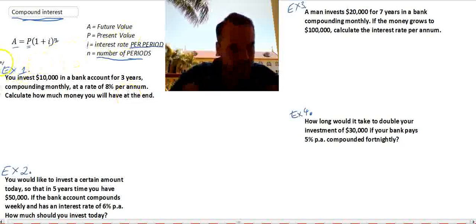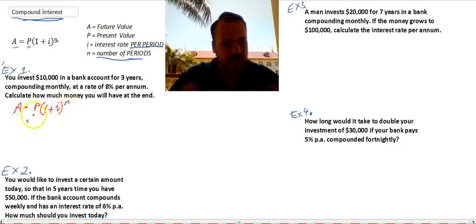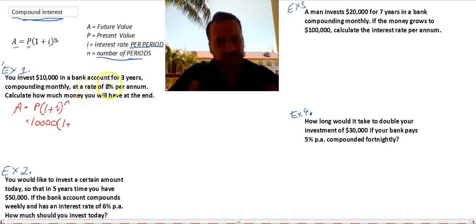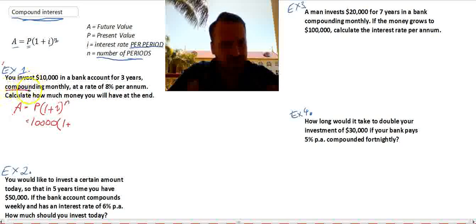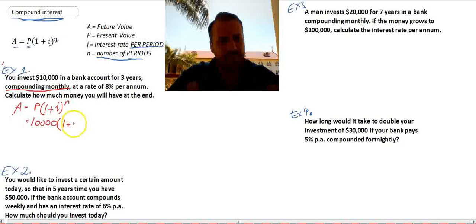Okay, so this is a question where we're finding the A value. So A equals P times 1 plus I to the power of N. Now, our principal is the money we start with, $10,000 times 1 plus... Now, here's where it gets interesting. It says an interest rate of 8%, but it's compounding monthly. So our number of periods is not... Sorry, our interest rate isn't going to be 8%. It's going to be 8 divided by 12. So that's going to be 0.08 divided by 12. That's going to be our interest rate.